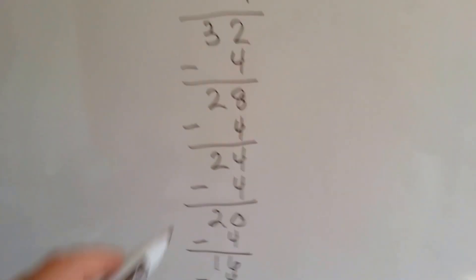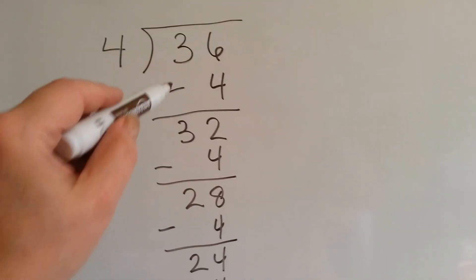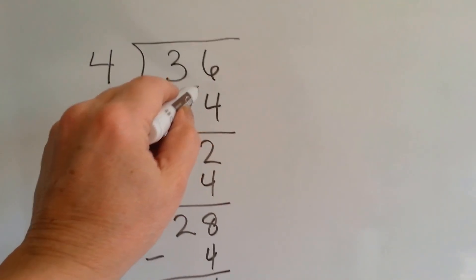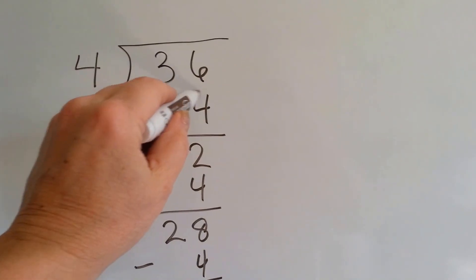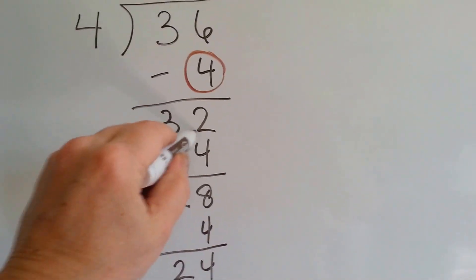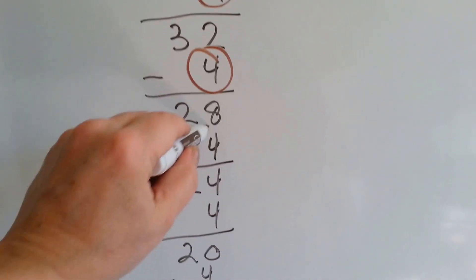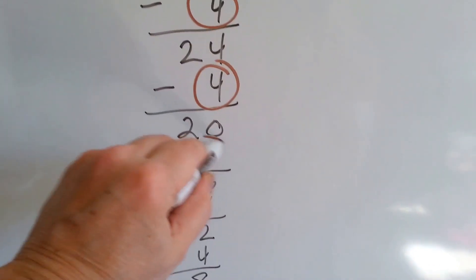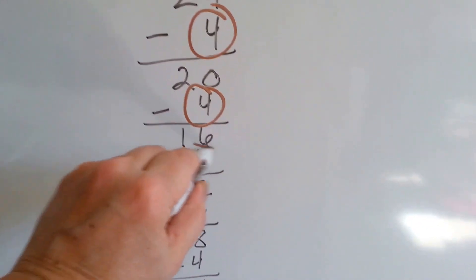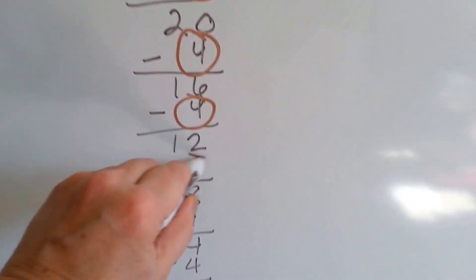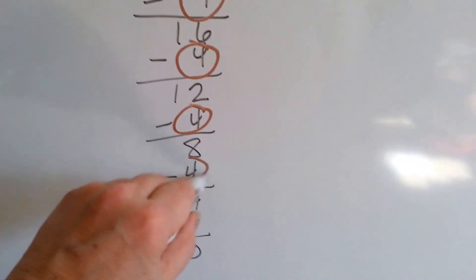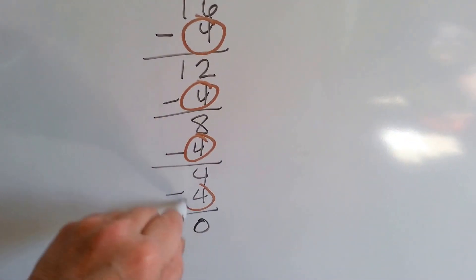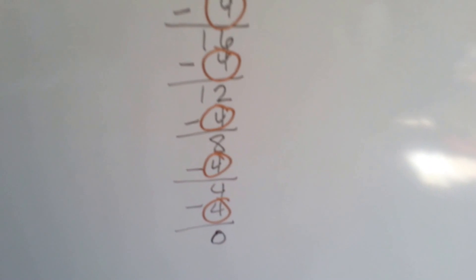Then we count how many 4's we took away: 1, 2, 3, 4, 5, 6, 7, 8, 9. We took away 9 4's.